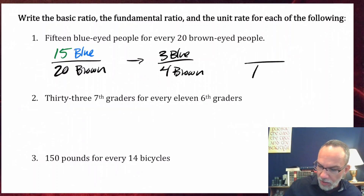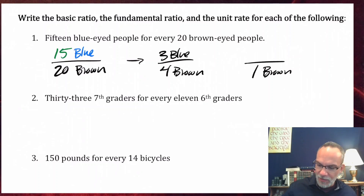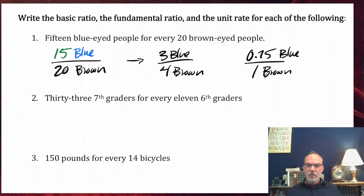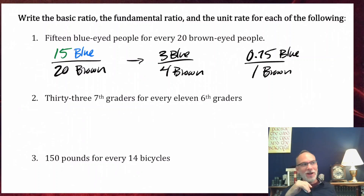A ratio doesn't necessarily mean the actual count — there really were 15 and 20 — but we express the relationship in simplified form with integers on top and bottom. For the unit rate, divide 3 by 4: that gives 0.75 blue to 1 brown-eyed person. That's not all that helpful since you can't have 0.75 of a person, so in this case the fundamental ratio is more useful.